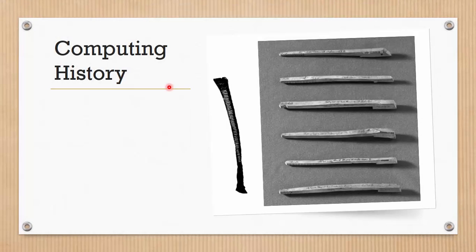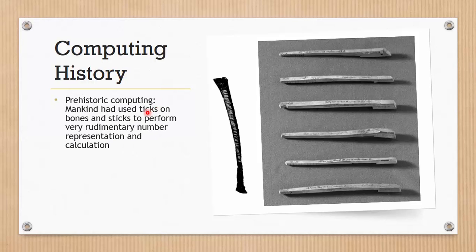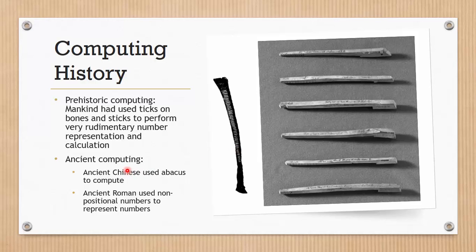Still on computing history. Mankind have been using tools to count. We started counting by putting ticks on bones like this so that we can record number. We can do calculations also. And in the ancient time, Chinese people used Abacus to compute and they are still using it. And the ancient Roman people have been using non-positional numbers to represent number. Instead of representing number as the number of ticks on bones like this, the Roman people were smart enough to represent numbers as symbols, even though not the positional decimal number that we have now.